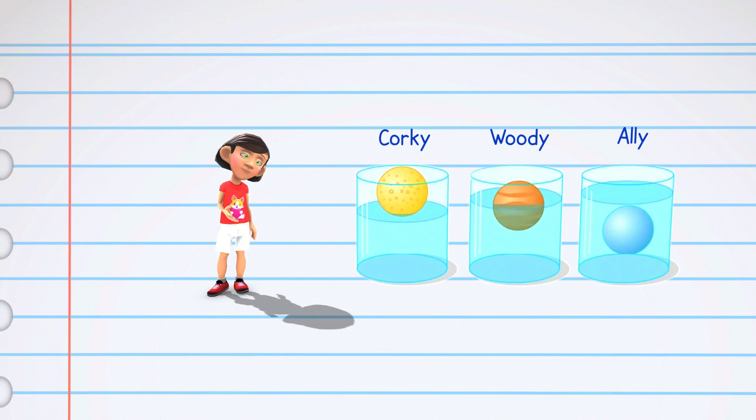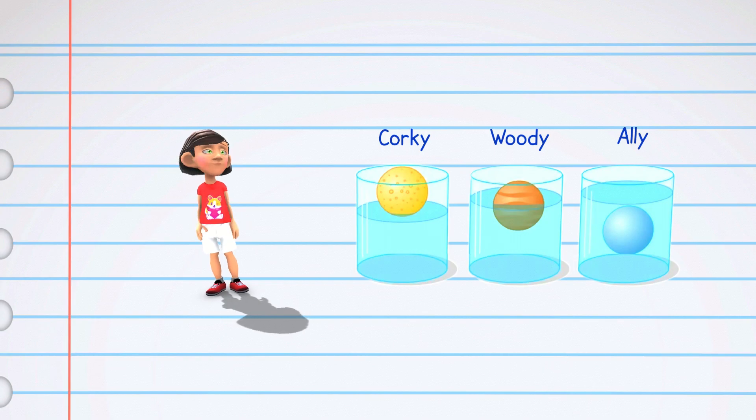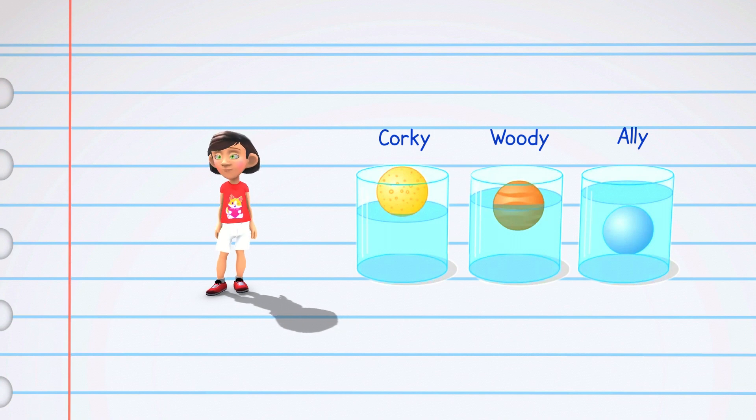Ally the aluminum is strong and heavy. When we put Ally in the water, she quickly goes down to the bottom like a rock in a pond. Aluminum is denser than water, so it prefers to stay beneath the surface.